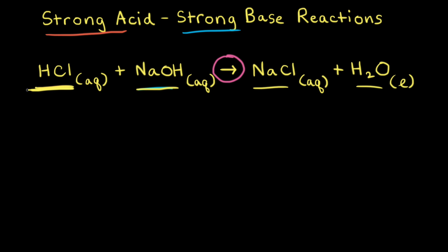Let's think about the ions involved. Since hydrochloric acid is a strong acid, HCl ionizes 100% in solution. Therefore, in solution, HCl consists of H⁺ ions and Cl⁻ anions. Sodium hydroxide is a strong base, and strong bases dissociate 100% in solution. Therefore, an aqueous solution of sodium hydroxide consists of sodium ions, Na⁺, and hydroxide anions, OH⁻.